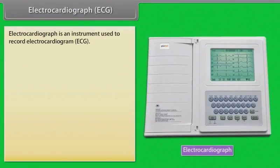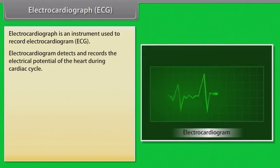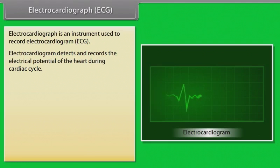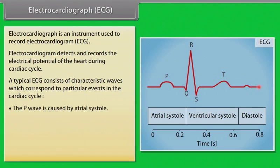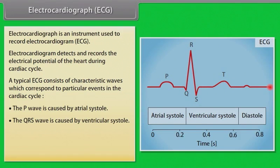An electrocardiograph is an instrument used to record an electrocardiogram (ECG). The ECG detects and records the electrical potential of the heart during the cardiac cycle. A typical ECG consists of characteristic waves: the P wave is caused by atrial systole, the QRS wave is caused by ventricular systole, and the T wave coincides with ventricular diastole. The heart rate can be calculated from the interval between one P wave and the next.